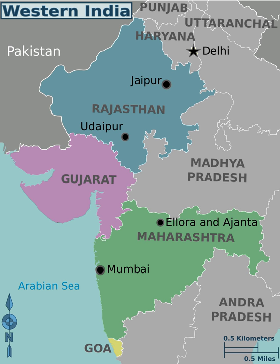Marathi, with about 73 million speakers, is the most widely spoken language, followed by Gujarati with about 46 million speakers and Konkani with 2.5 million speakers, all of which are Indo-Aryan languages. As in other parts of India, a high level of multilingualism is seen, with English and Hindi being spoken as additional languages in urban areas. The average literacy rate of Western India is around 76%, higher than the national average of 70.5%. The population density is around 290 per square km, the average fertility rate is about 2.2, and the average household size is about 4.7.